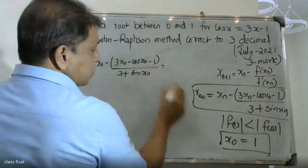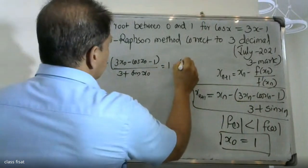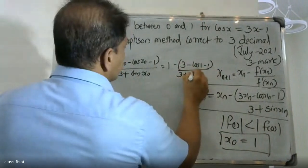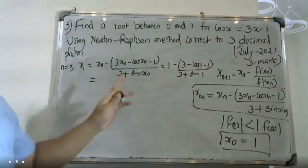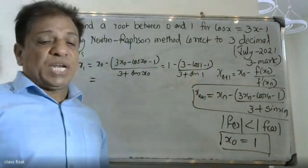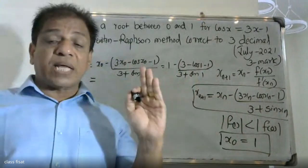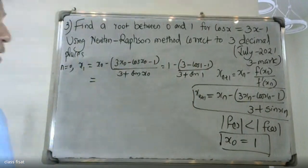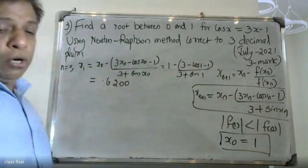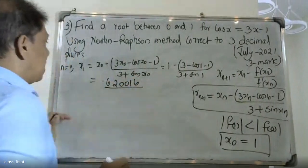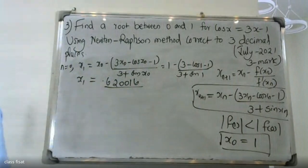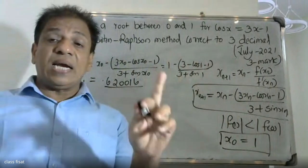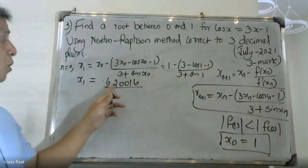With x0 equal to 1, we calculate x1: x1 equals 1 minus (3 times 1 minus cos 1 minus 1) divided by (3 plus sin 1). Calculating cos 1 and sin 1 values, we get x1 is equal to 0.620016.